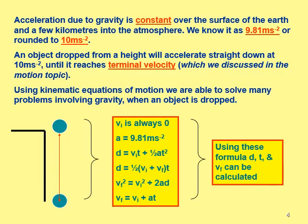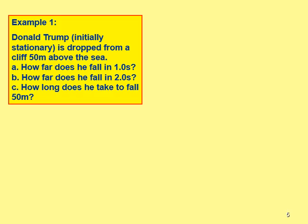Using the kinematic equations we can calculate the final velocity of that ball as it falls from the height of the table, assuming initial velocity is zero. For example: Donald Trump, initially stationary, is dropped from a cliff 50 meters above the sea. Question A asks how far will he fall in one second? Question B: how far in two seconds? Question C: how long until he hits the ocean?